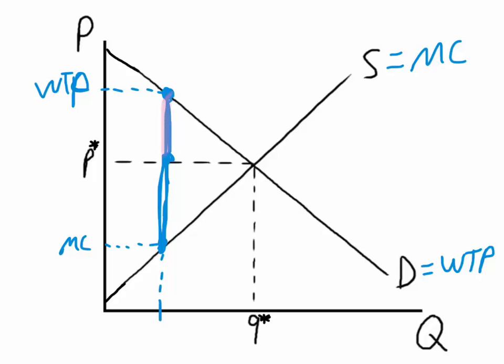Consumer surplus is the difference between willingness to pay and the price, while producer surplus is the difference between price and the marginal cost. Any transaction to the left of our equilibrium point is going to be mutually beneficial. The benefits are going to outweigh the costs. Notice that the market stops producing output at this quantity Q-star.